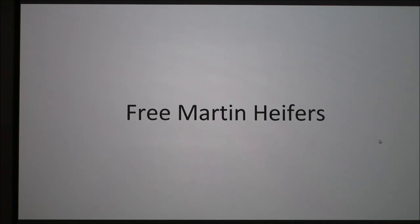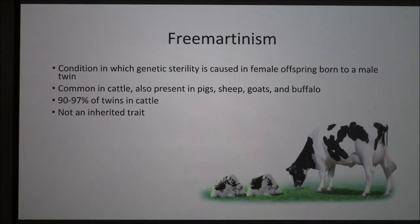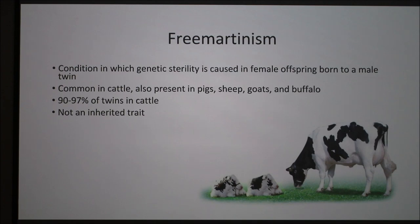I'll be talking about freemartinism in peppers. Freemartinism is a condition in which genetic sterility is caused by female offspring born to a male twin. It's common in cattle but it's also present in pigs, sheep, goats, and buffalo. 90 to 97 percent of twins born in cattle result in this, but it's not an inherited trait.